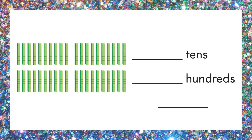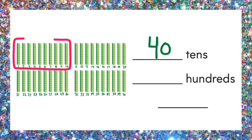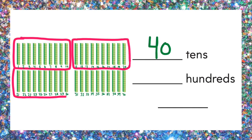And here's one more. Count the tens: 1 through 40. Forty tens. Circle the groups of 10 to find out how many hundreds: one, two, three, and four. Four hundreds. Write the number: 400.